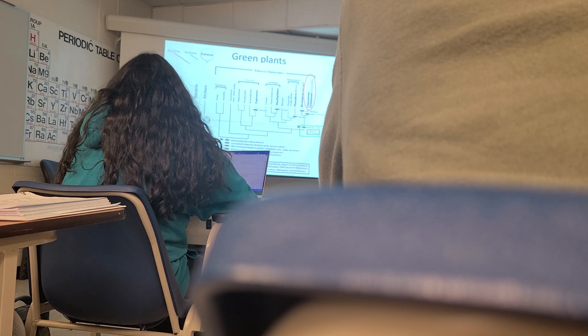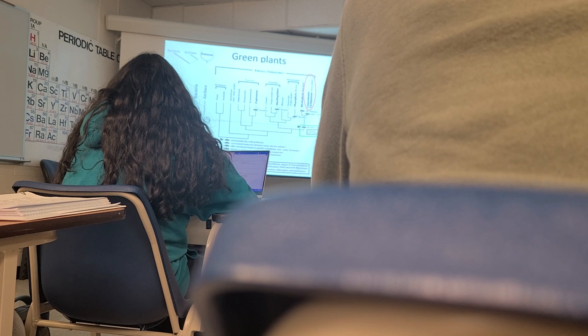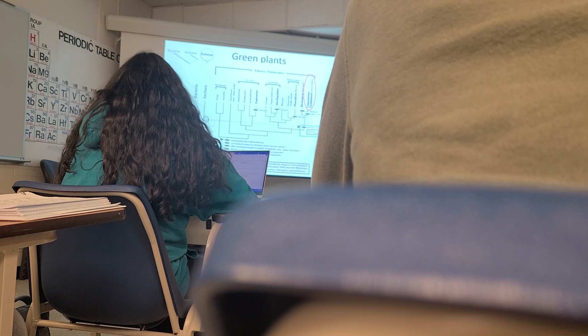An important thing to know: for each type of endosymbiosis, what specifically was engulfed? For primary endosymbiosis, it was a cyanobacterium. For secondary endosymbiosis, it was either a red alga or a green alga, depending on which secondary endosymbiosis event you're looking at — some involved green algae being engulfed and others involved red algae. The little stars on the phylogram indicate secondary endosymbiosis events.